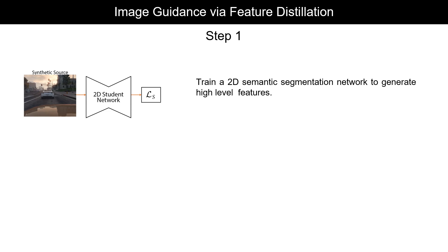IGNet is trained in two steps. We begin by training a 2D semantic segmentation model to generate per-pixel high-level features that better capture shape and context for sparse regions. By training on synthetic data, we avoid introducing additional annotation costs. However, training on synthetic data yields yet another challenge: there exists a domain gap between synthetic images and real images that hinders performance in 2D.